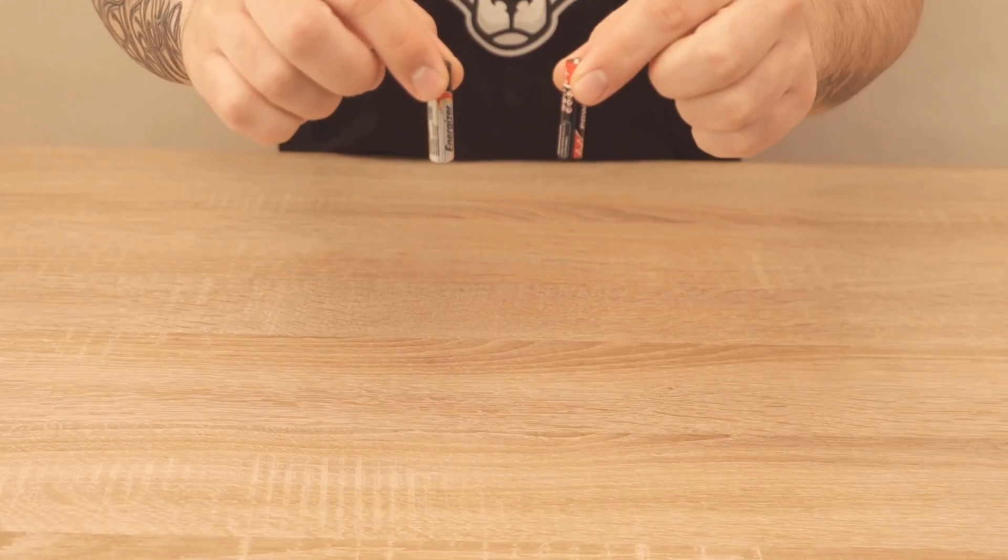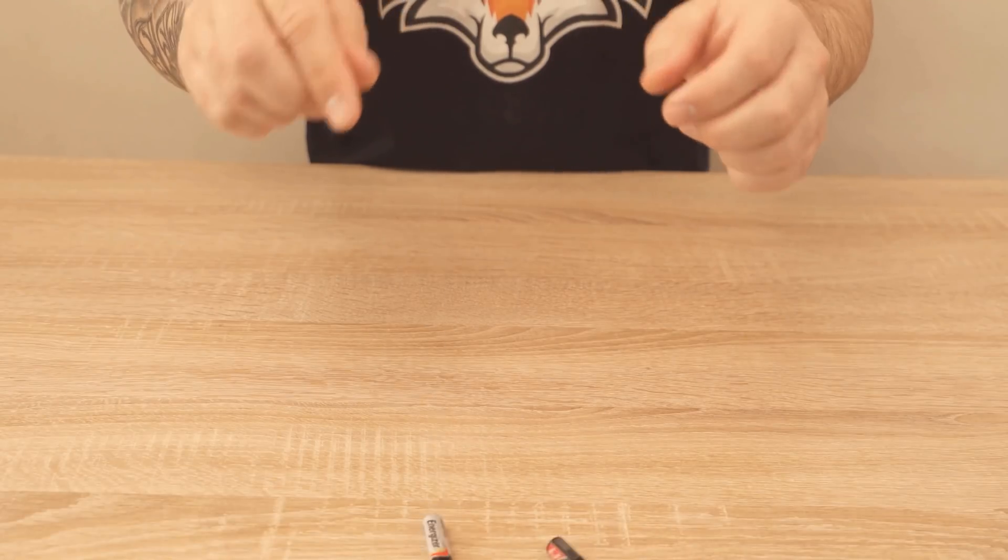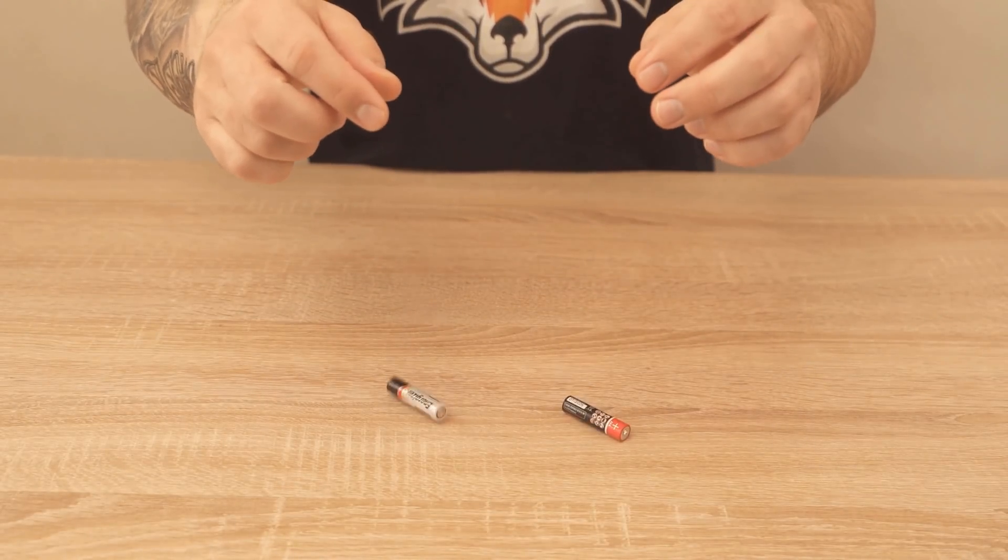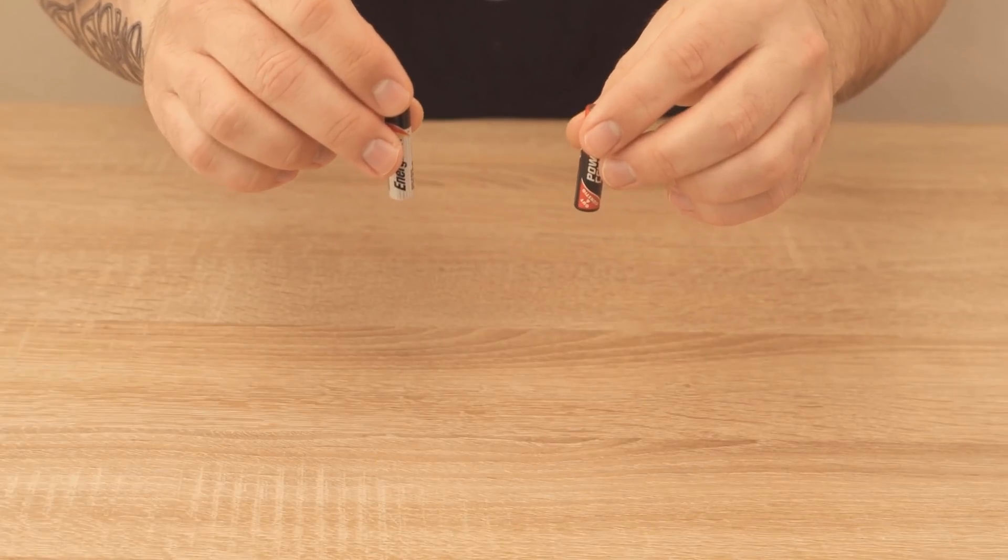You have to drop the batteries from a height of about 15cm onto a table. Here you can see, if you look closely, that both batteries react differently and that has a reason.